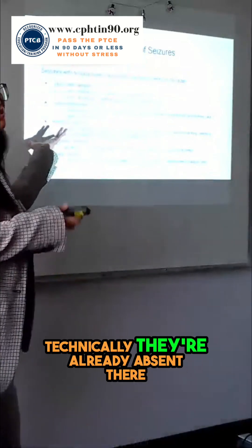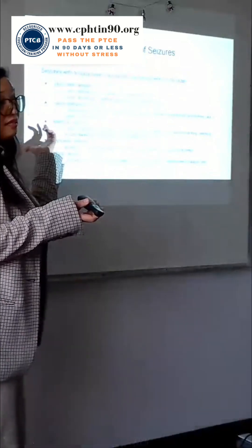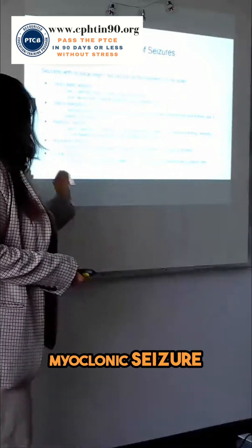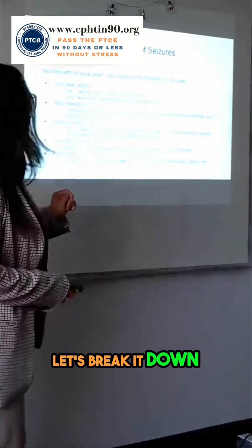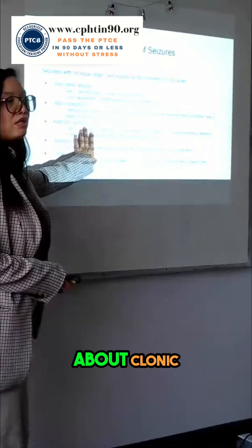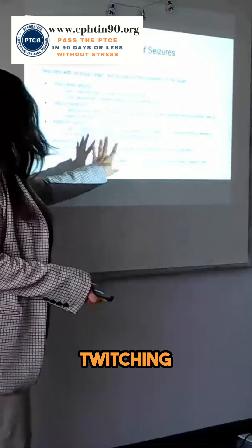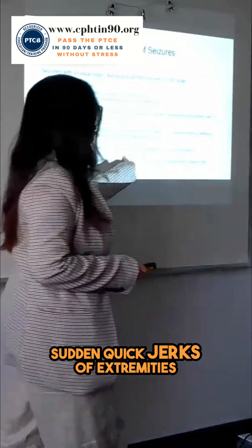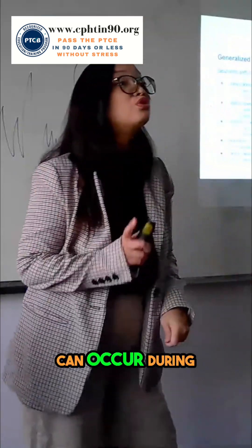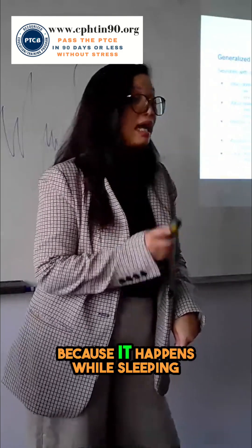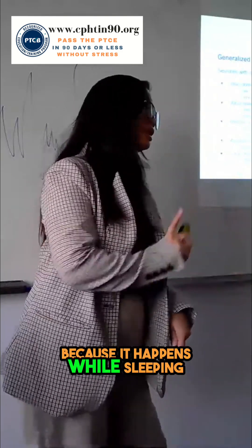Let's discuss the myoclonic seizure. 'Myo' means muscles and 'clonic' means jerking or twitching. This type of seizure involves no loss of consciousness — there are sudden, quick jerks of the extremities, your hands and your legs. It can also occur during deep sleep, which makes it scary as well.